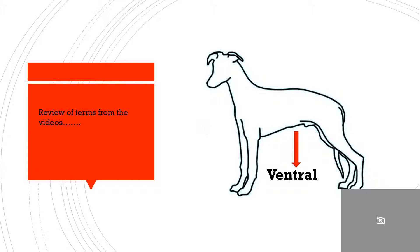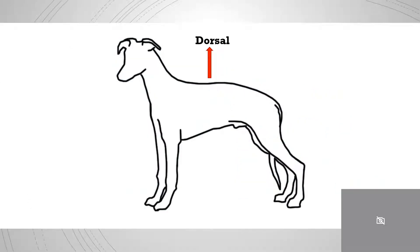A review of terms from the videos. The arrow here is showing the ventral aspect of the body. The arrow here is showing the dorsal aspect. Remember the dorsal fin in the dolphin, and this will help you to remember this term.